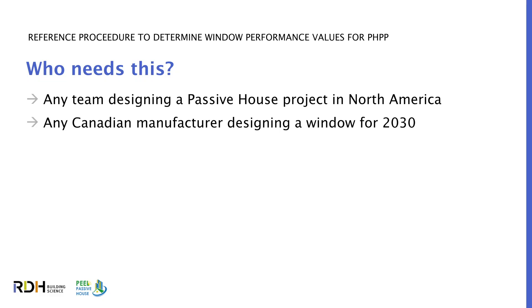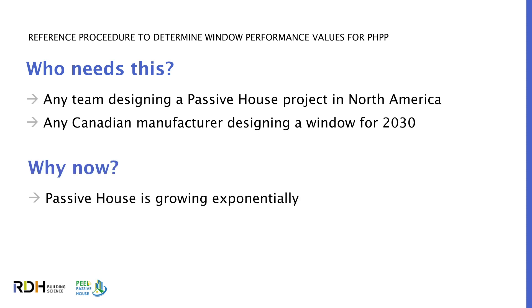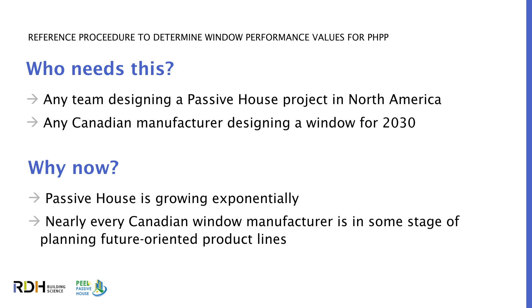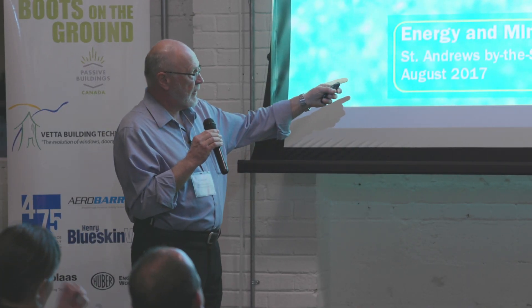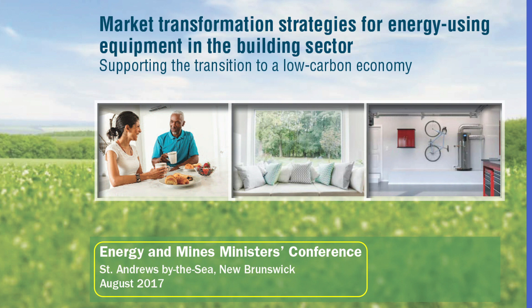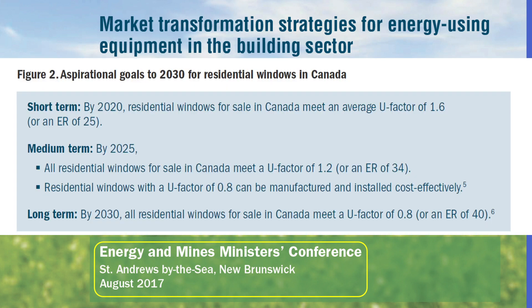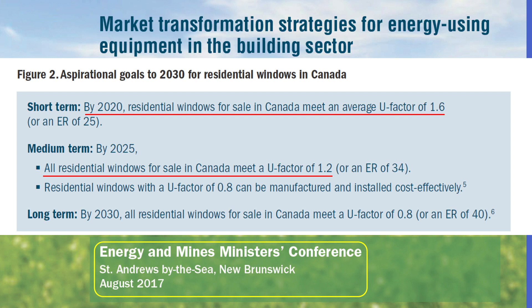We think it's also important for any Canadian manufacturer designing a window for 2030. Passive House is growing exponentially. Nearly every Canadian window manufacturer is in some stage of planning their future-oriented product lines. At the Energy and Mines Ministers Conference, Natural Resources Canada announced market transformation strategies for energy-using equipment in the building sector, with very aggressive aspirational targets for window performance. By 2020, residential windows in Canada will have an average U-factor of 1.6. By 2025, all residential windows for sale in Canada must meet a U-factor of 1.2.